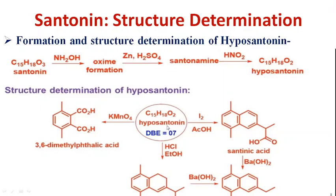The structure of hyposentonin is determined by chemical analysis. KMnO4 oxidation converts it to dicarboxylic acids, yielding 3,6-dimethylphthalic acid, revealing a ring structure degraded during oxidation. Reaction with iodine and acetic acid results in formation of sandinic acid, suggesting the lactone ring has been broken. Reactions with barium hydroxide and with HCl and ethanol yield the same structural type, allowing assignment of the positions of the two methyl groups in hyposentonin.